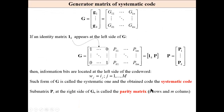If an identity matrix appears at the left side of matrix G, then information bits are located at the left side of the codeword. This form is called the systematic form, and the resulting code is called a systematic code. The submatrix P — with K rows and M columns — is called the parity check submatrix.